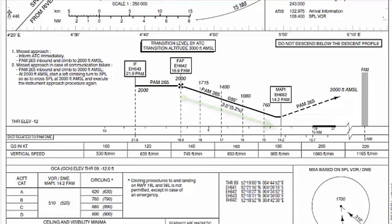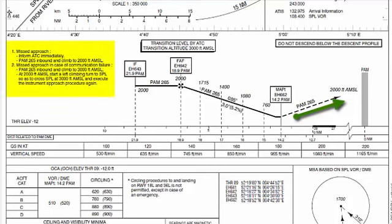We will do a 745 feet per minute descent. Once we reach our missed approach point, that is around 14.2 DME from Pampas VOR, we will do our landing if we have visual contact to the runway or the runway lights. If not, we will do a missed approach, as mentioned in the profile view right over here.